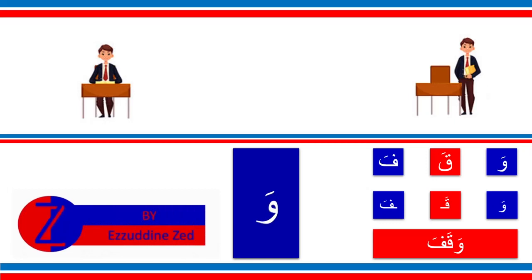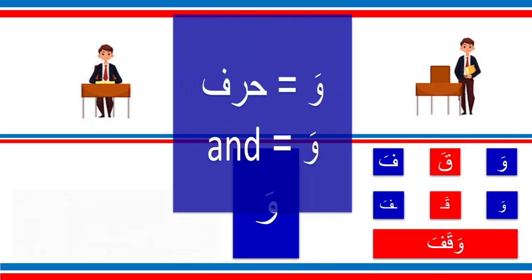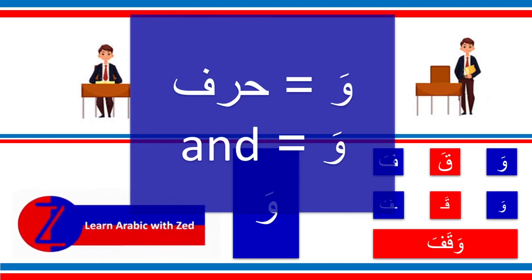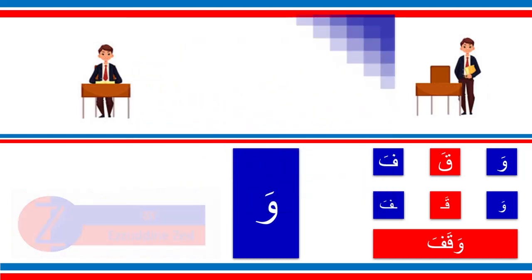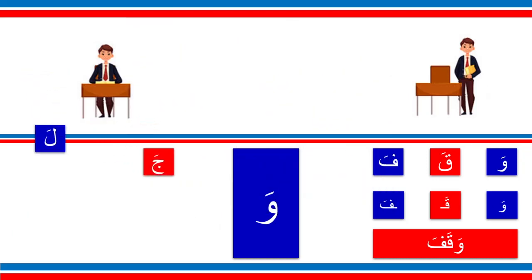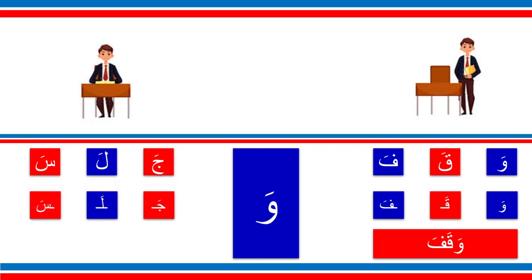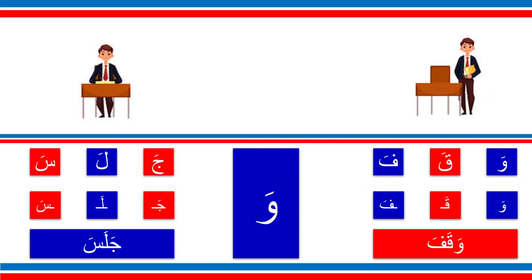Now we have waqafa. But why do we have wa here? Listen — wa is a letter of the alphabet and we use wa also like 'and.' So when we have wa alone between two words it means 'and.' Next, this letter, then this letter, then this letter — Jeem in the starting, Lam in the middle, Seen in the end. Excellent, so we connect them and it will be jalasa.